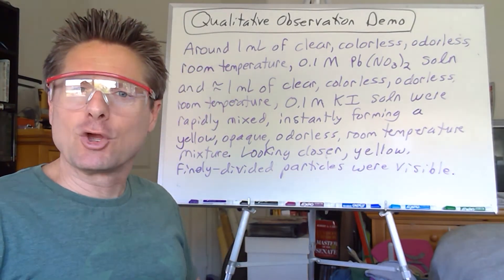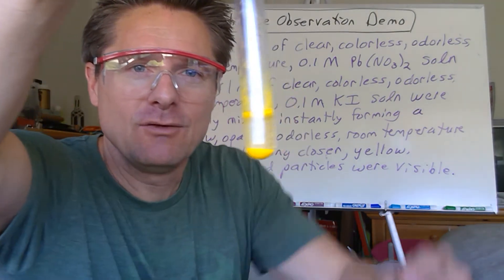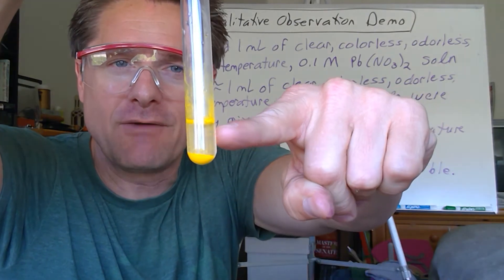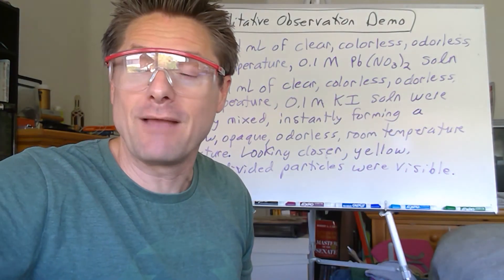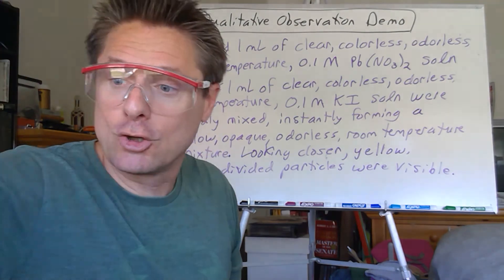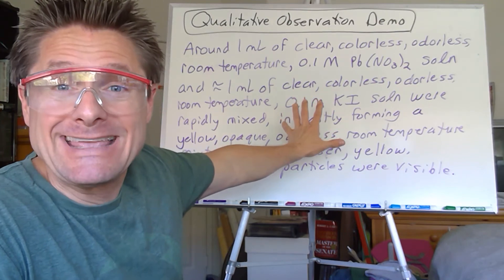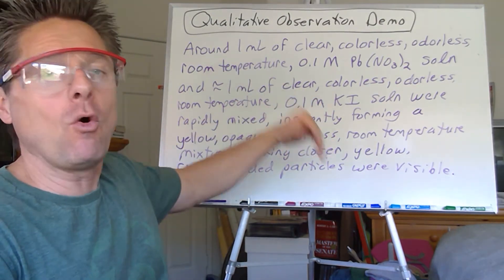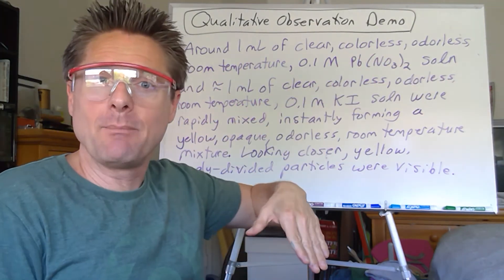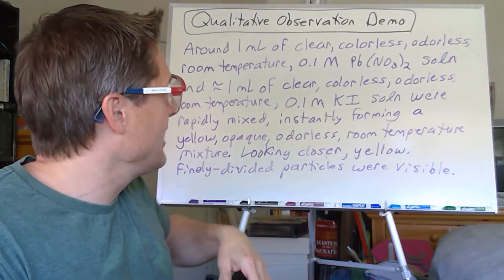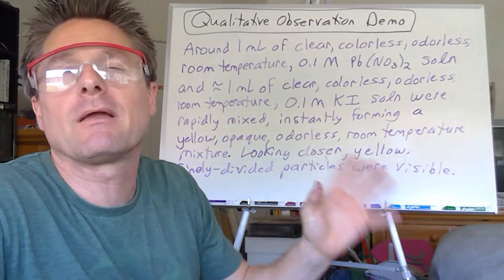From this I can conclude we formed a precipitate — and looking at the reactants in a double displacement reaction I could probably conclude it was lead(II) iodide. The lead(II) iodide is the insoluble solid and the potassium nitrate is in solution. But you can't write conclusions in your observations section. Now I'm going to erase this and rewrite the whole thing with abbreviations, and you'll see how much nicer it looks.